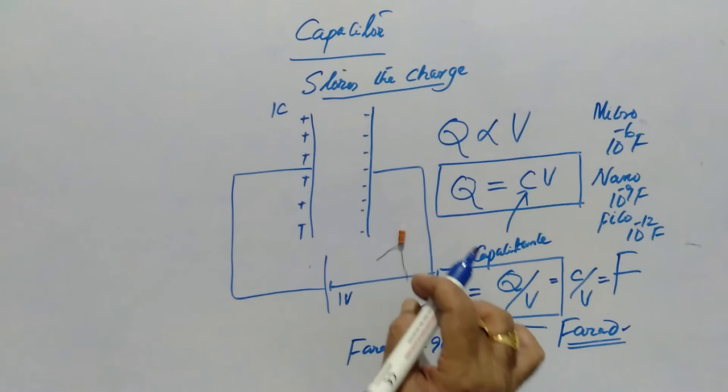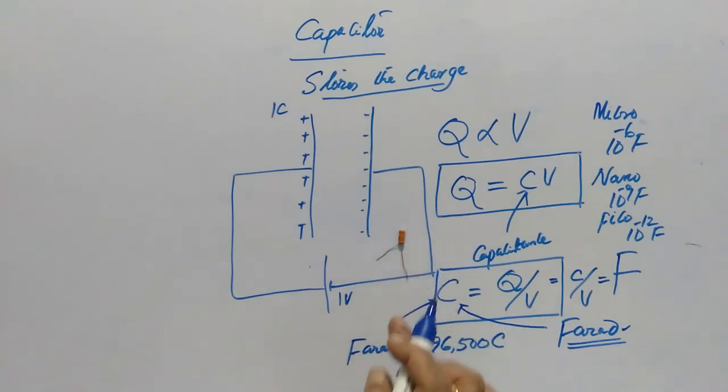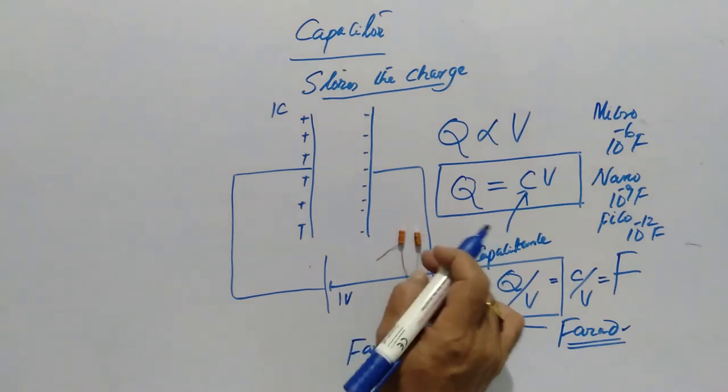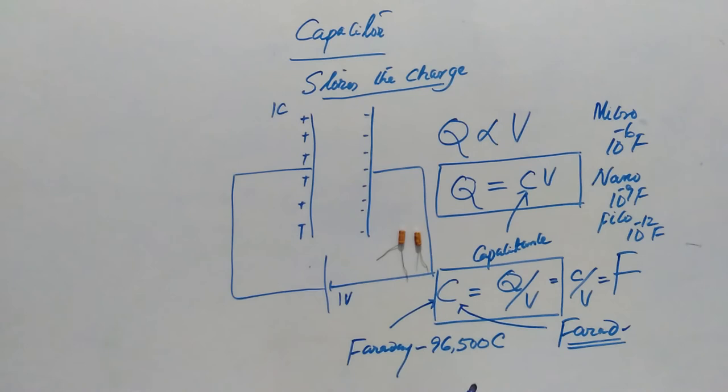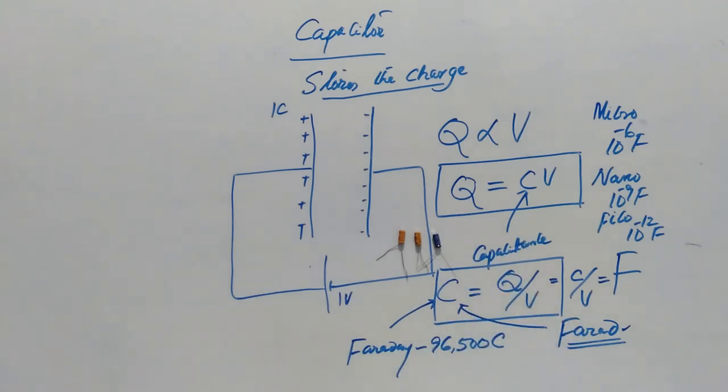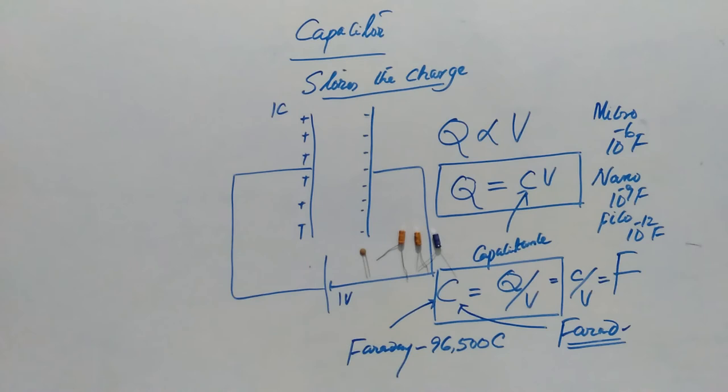You can see, this is the capacitance. This capacitor is having a capacitance of 100 microfarads. This is only 1 microfarad. This is again 100 microfarads. These are called ceramic capacitors.